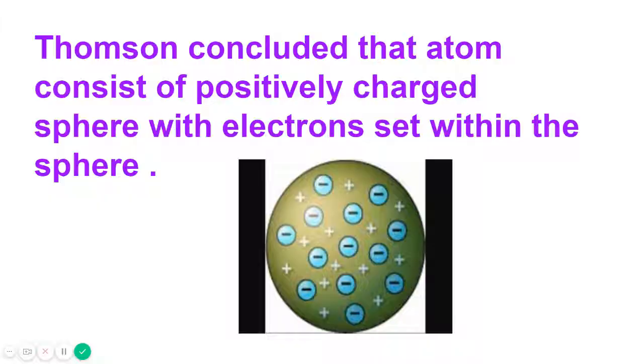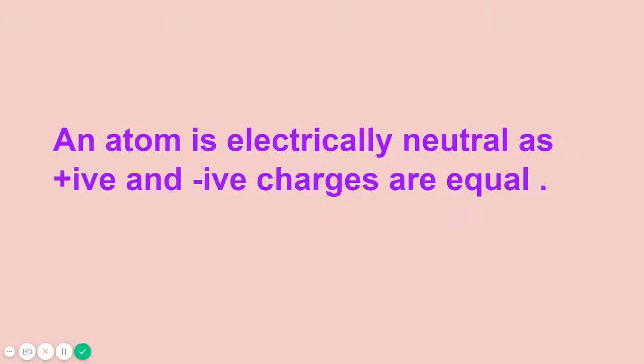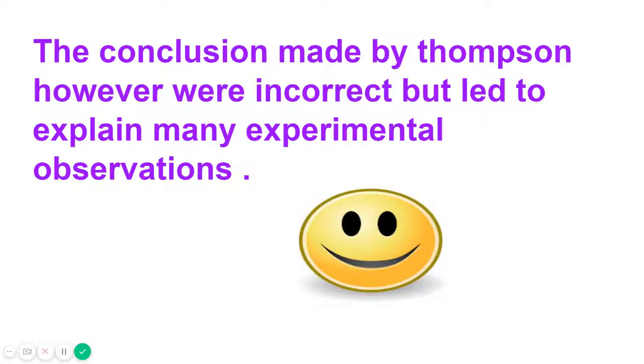Thomson concluded that an atom consists of a positively charged sphere with electrons set within the sphere. As you can see, an atom is electrically neutral as positive and negative charges are equal. So Thomson's conclusion was that electrons were embedded in a sphere of positive charge.